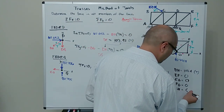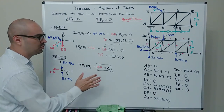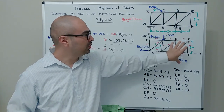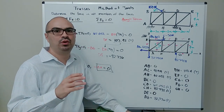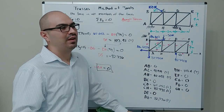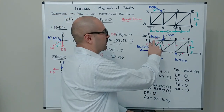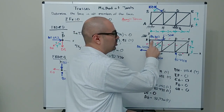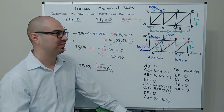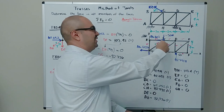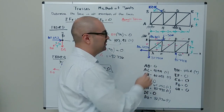Here's a recap of the method of joints. We started with a free body diagram of the whole truss to find the pin support reactions at A and the roller at G. Then we did free body diagrams at each joint. When choosing where to start, don't go alphabetically — always pick a joint with only two unknowns.